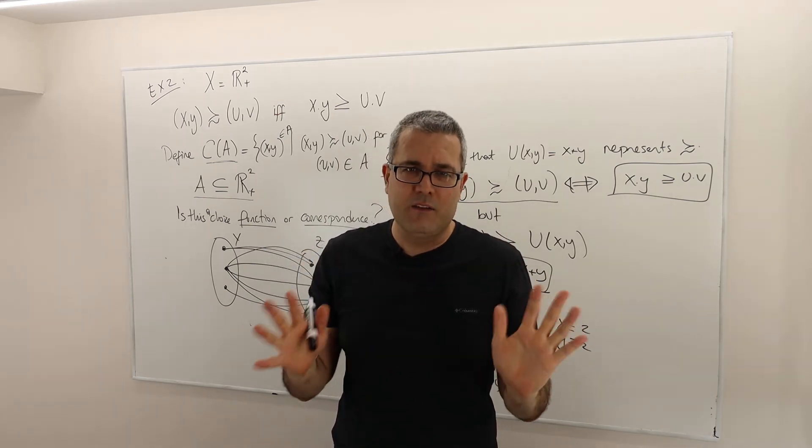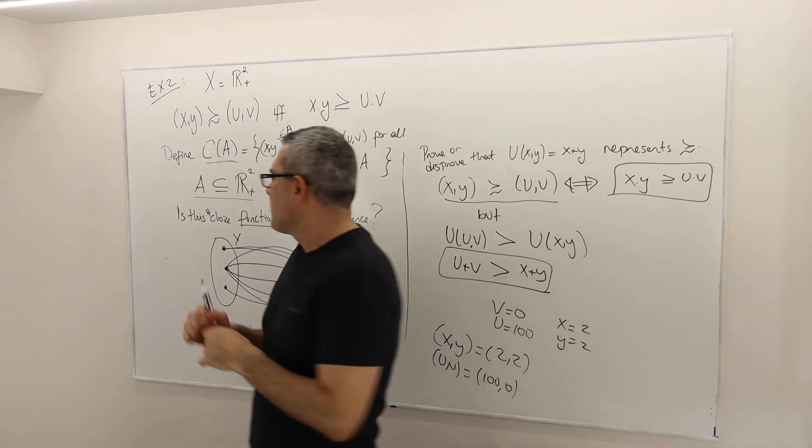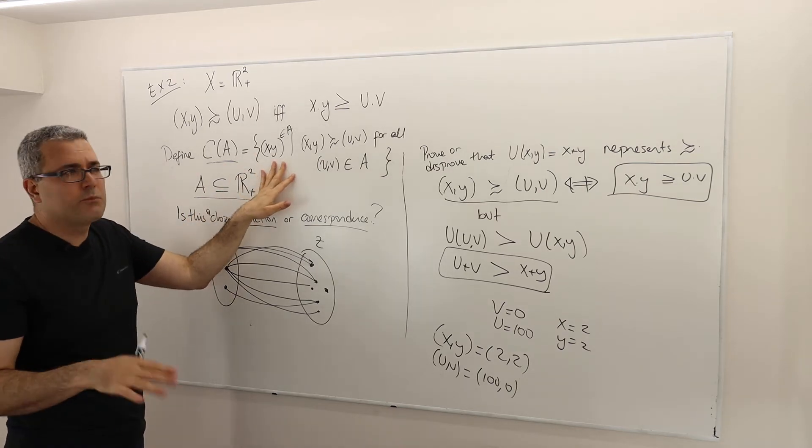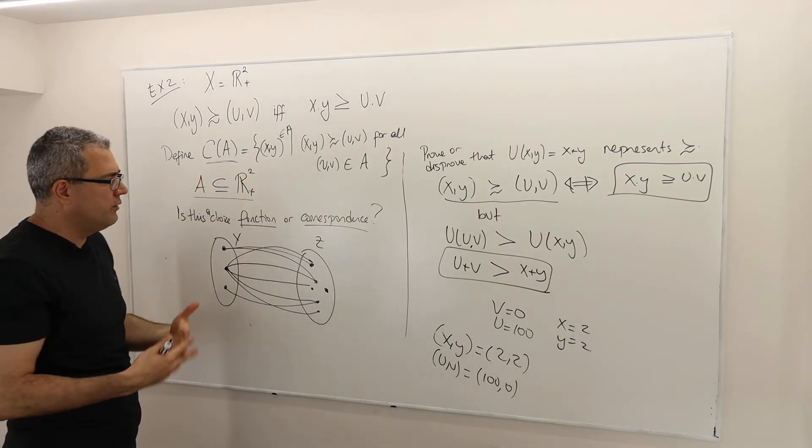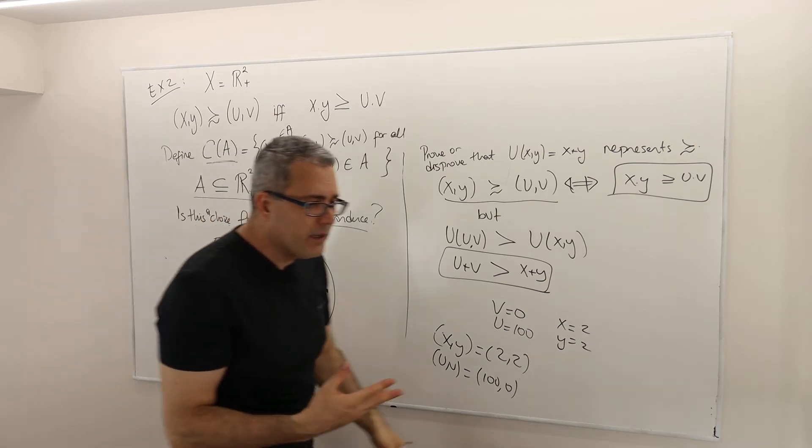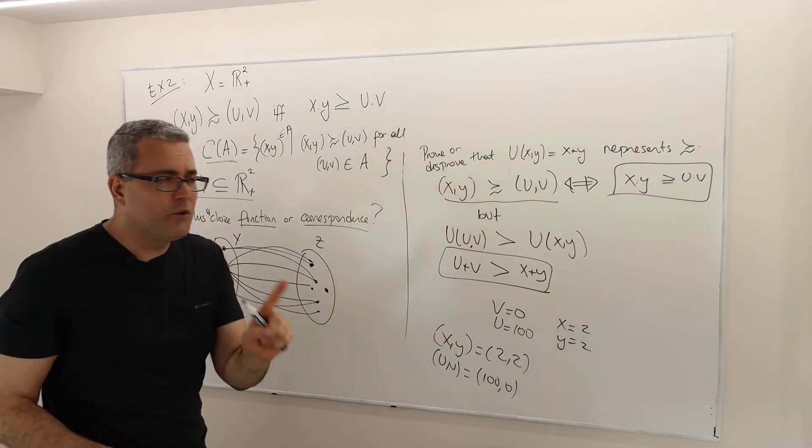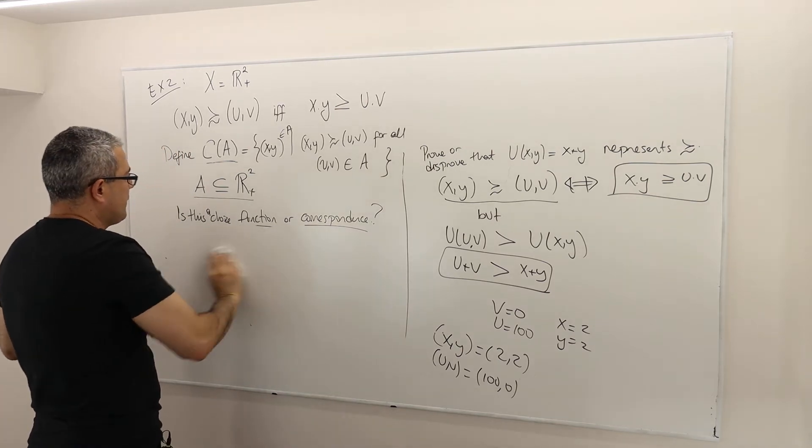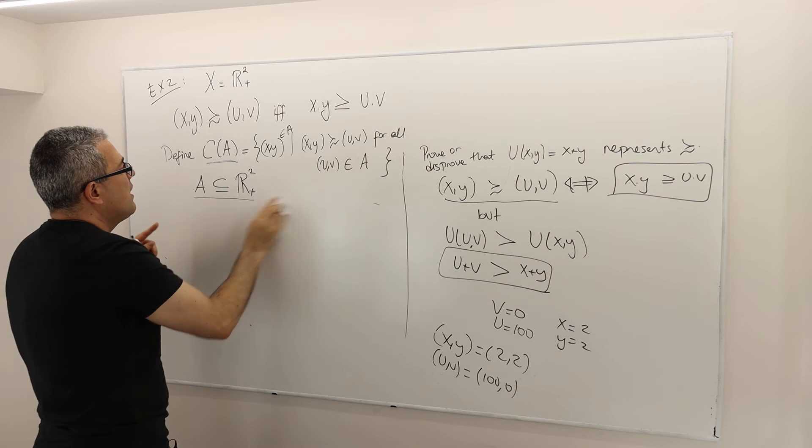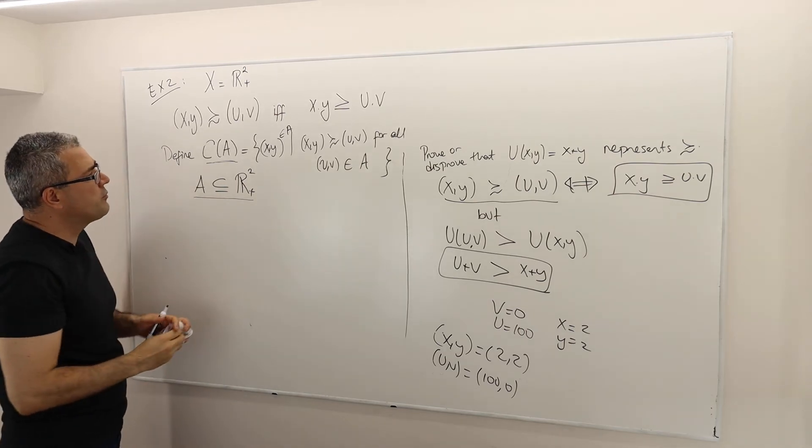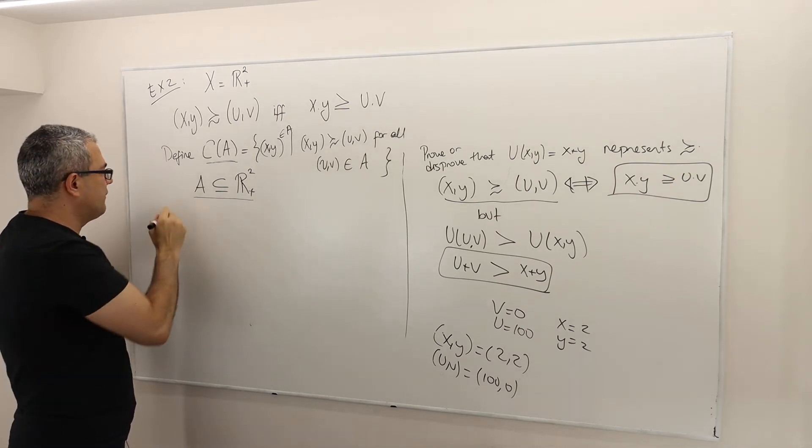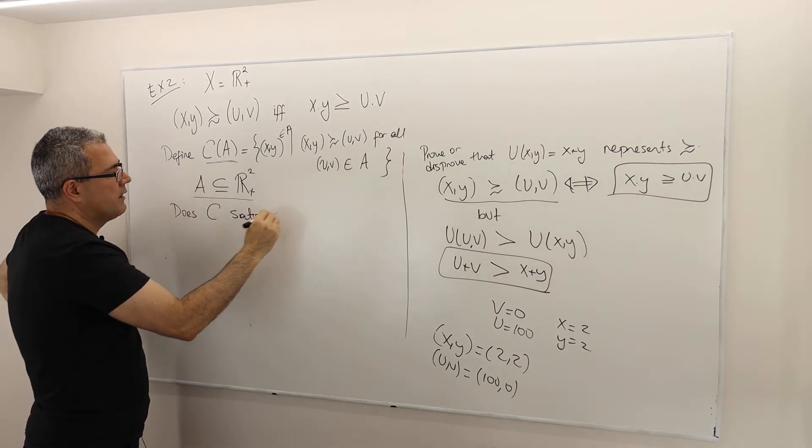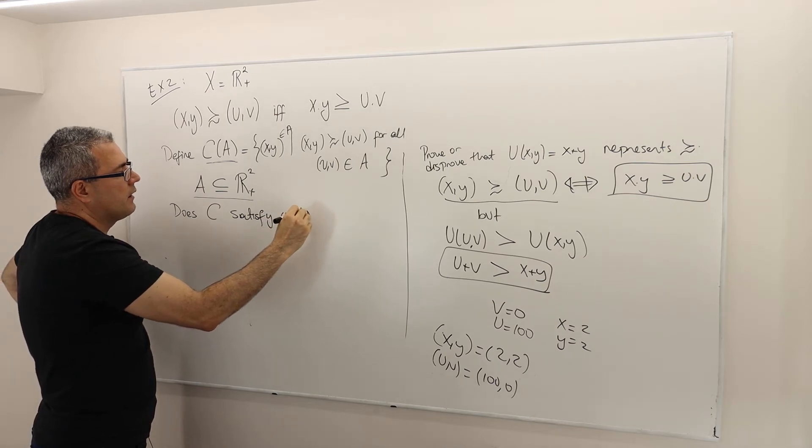But I'm not going to do that. So I'm going to focus on functions. Therefore, it is good to be sure that this is a function, not a correspondence. It is a function, all right? You can check that. But question is, I'll come to your question in a minute. So let me first finish this. So the question is, if this is my choice behavior, how do I show that it satisfies condition alpha? Does C satisfy condition alpha?